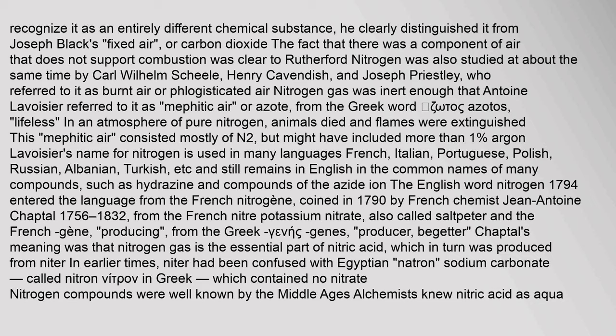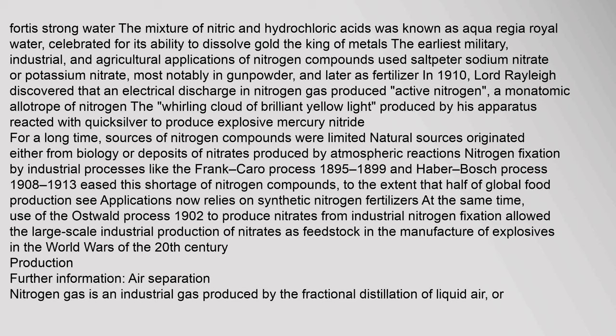Chaptal's meaning was that nitrogen gas is the essential part of nitric acid, which in turn was produced from nitre. Nitre had been confused with Egyptian natron (sodium carbonate). Nitrogen compounds were well known by the Middle Ages. Alchemists knew nitric acid as aqua fortis (strong water). The mixture of nitric and hydrochloric acids was known as aqua regia (royal water), celebrated for its ability to dissolve gold. The earliest military, industrial, and agricultural applications of nitrogen compounds used saltpetre, most notably in gunpowder.